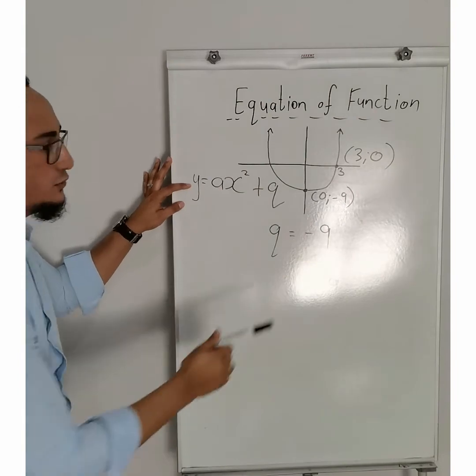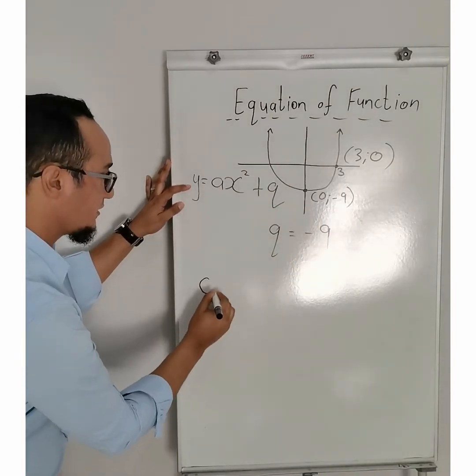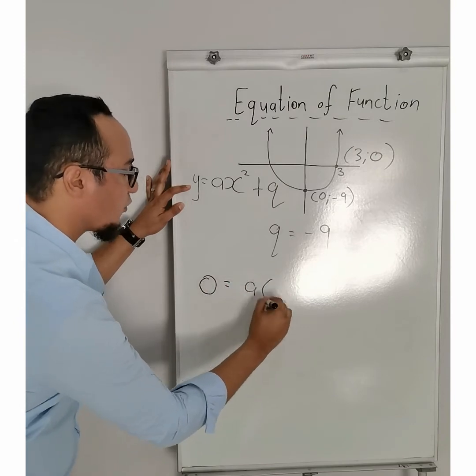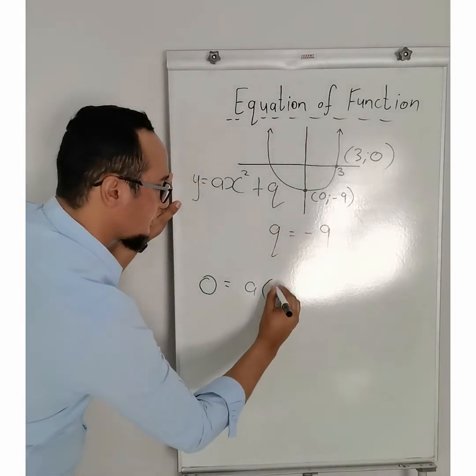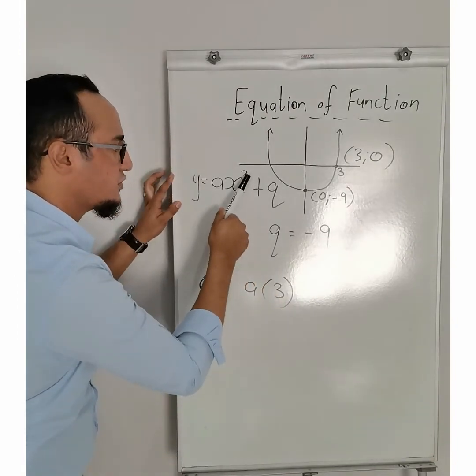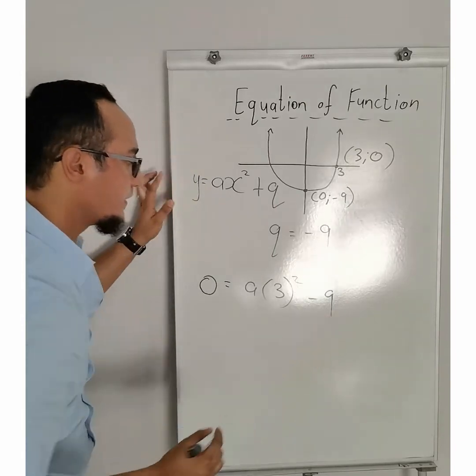So, what is my y value on my point, on my graph? It is 0 is equal to a. What's my x value in my point? It is 3, and do not forget about squared, and what's the value of q? Minus 9.